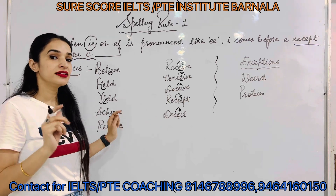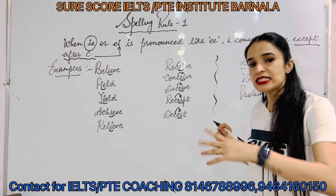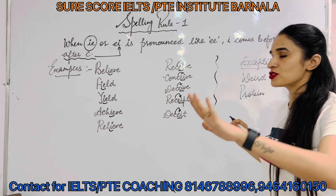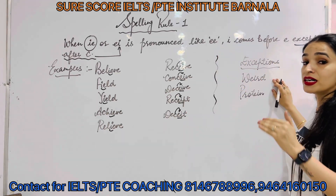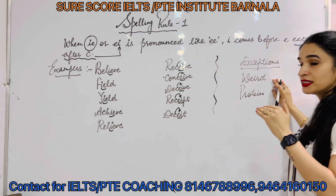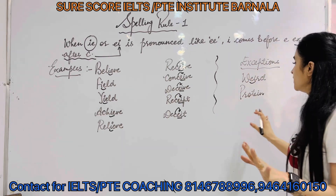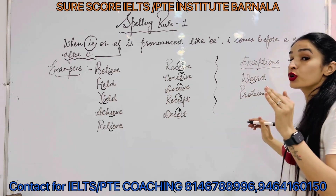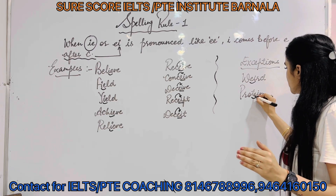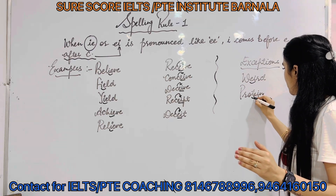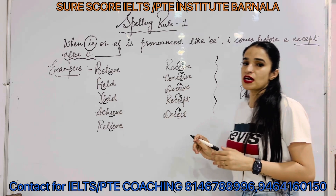So the first rule is very good. Now we are going to get exceptions. As you know, exceptions are always there. Number one: weird — so in weird, E, I will be there even though C is not here. Next: from T — again, E, T comes before, even though it is bad, it will be E, I. Got it? So exceptions are always there.